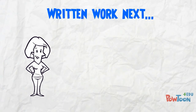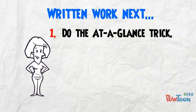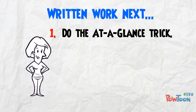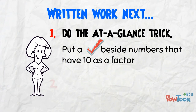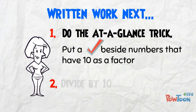Your teacher will give you written work next to show your understanding. First, do the at-a-glance trick we tried here — look at each number. The digit in the 1s column tells you what to do. Put a check mark beside each number that has 10 as a factor. After your predictions have been checked, go ahead and divide by 10.